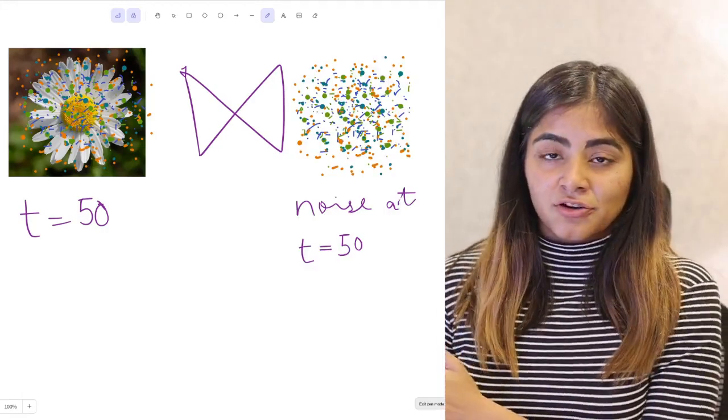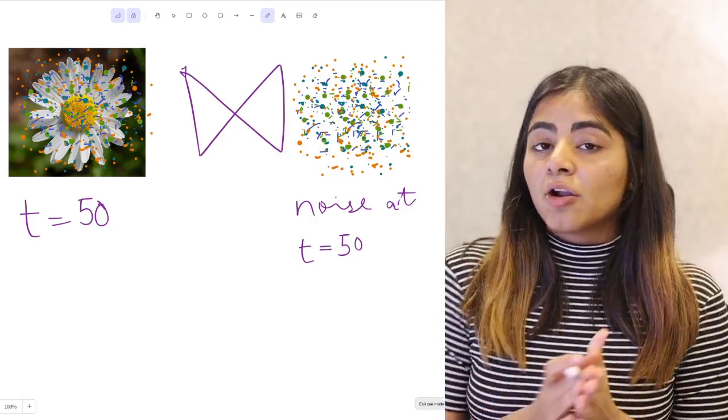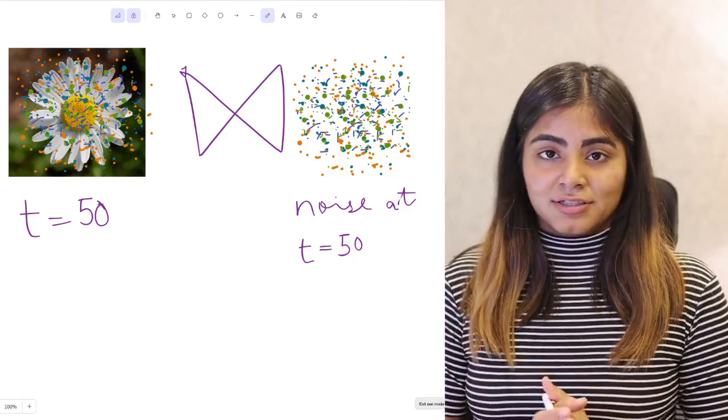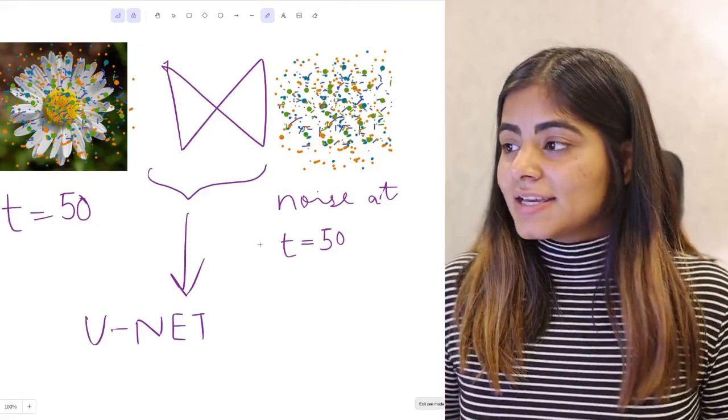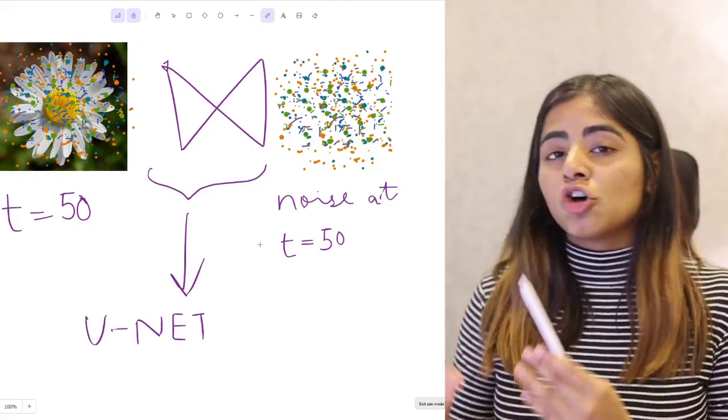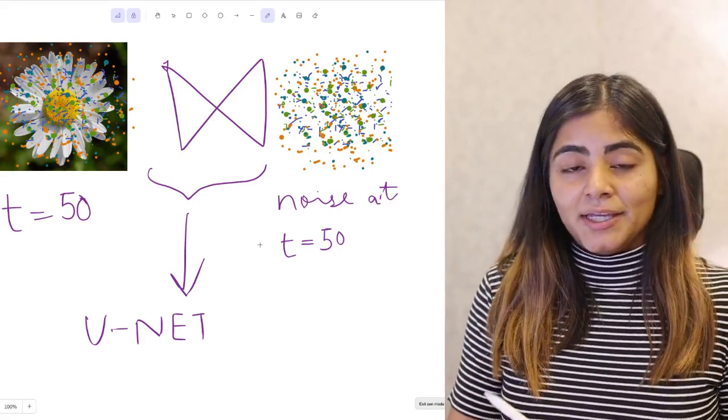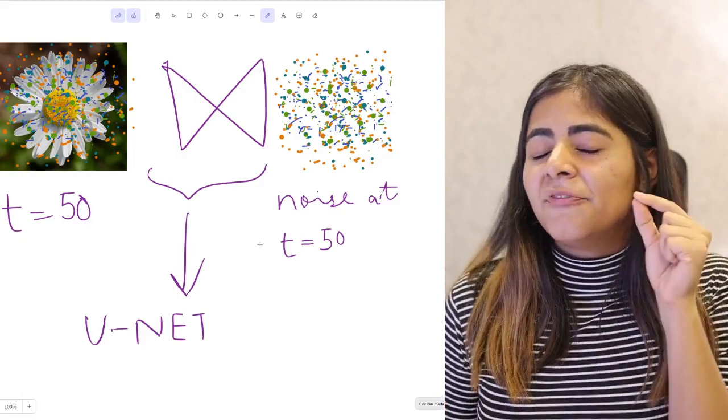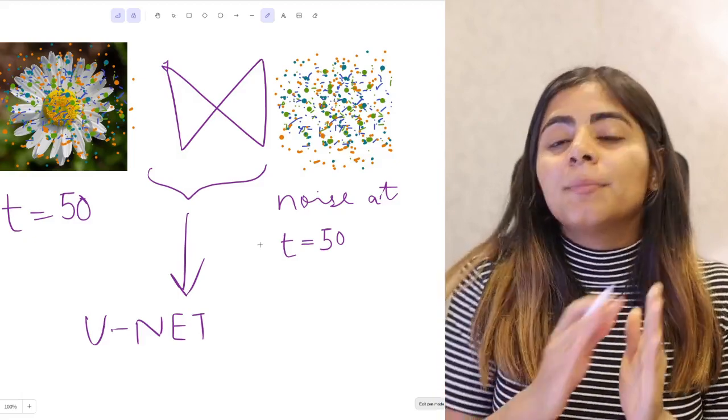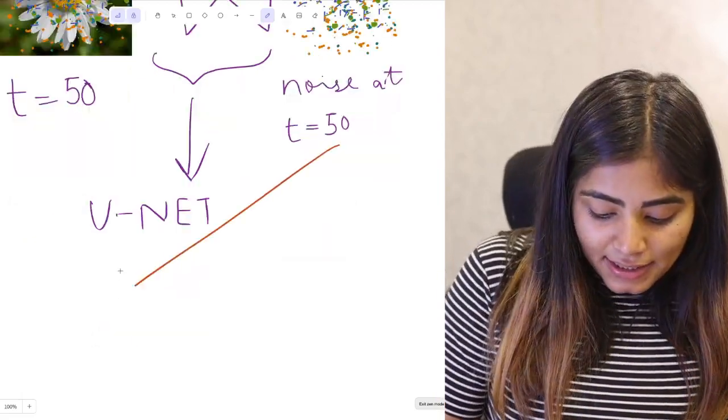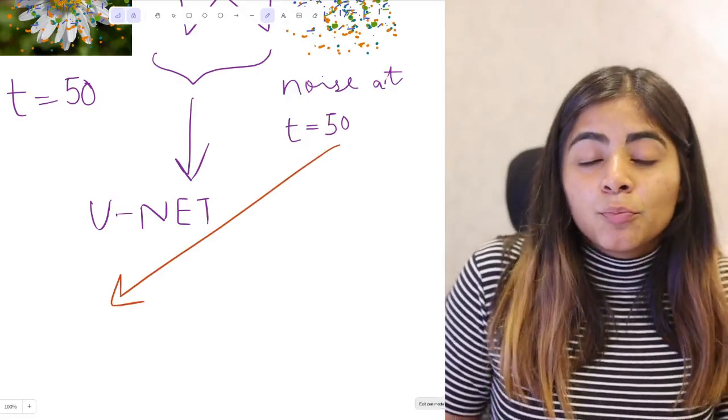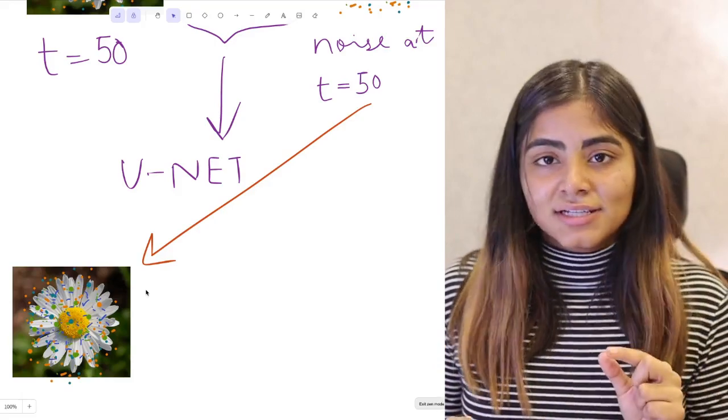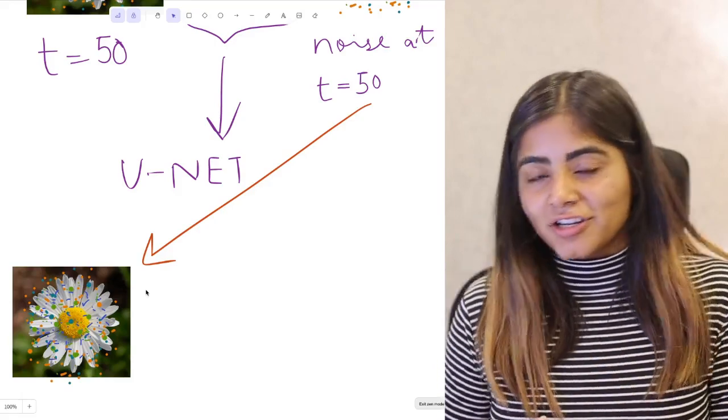We are going to subtract this noise from our noisy image, not to get back our original image, but to get an estimate of what the original image looks like. Now what we are going to do next is we are going to add most of that noise back into our image to get the image at the previous time step. Hence we'll only reduce some fraction of that noise, put back most of that noise. So we take this noise and we put most of that noise back, which will give us a slightly less noisier image at t equals to 49.